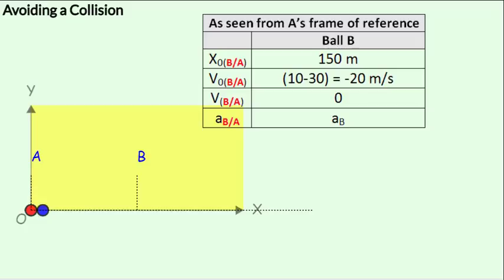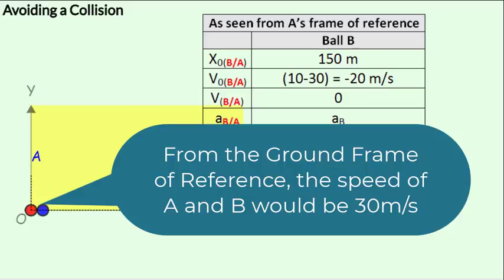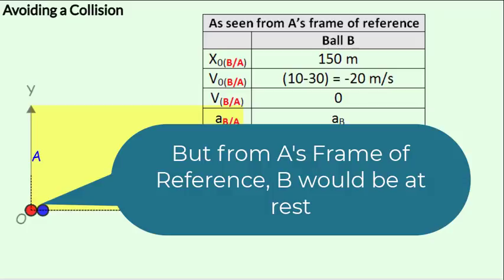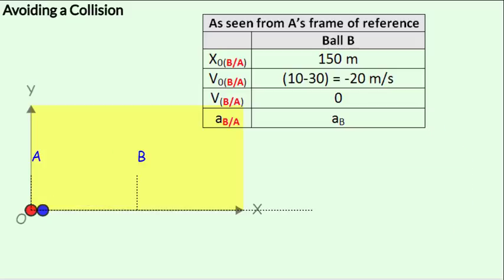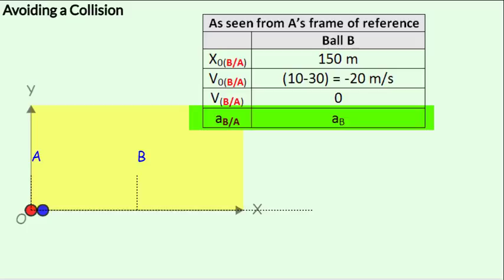From the ground frame of reference, both these speeds at this instant would be 30 meters per second, since A is moving uniformly at 30 meters per second. But from A's frame of reference, B would be at rest in this position. Also, the final displacement as B is just about to collide with A would be 0. The acceleration of B with respect to A would be the acceleration of B minus the acceleration of A, but since the acceleration of A is 0, the relative acceleration of B with respect to A would be AB — the acceleration of B in the ground frame of reference.